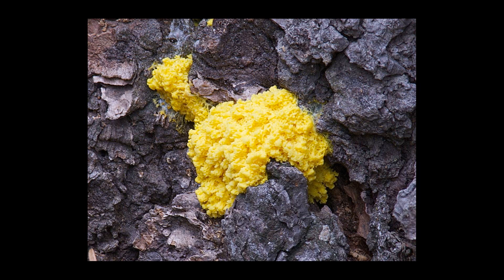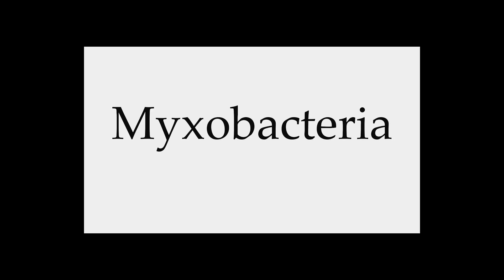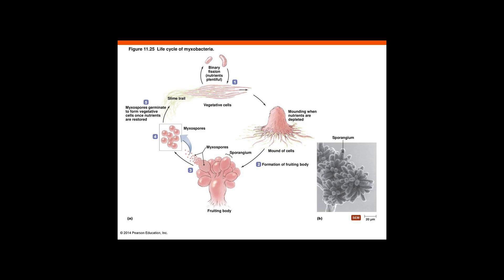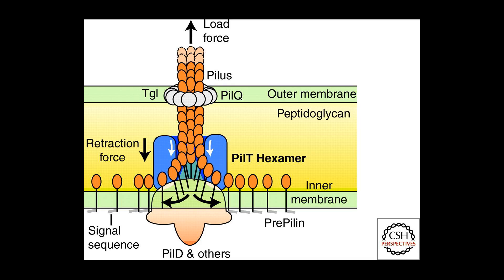Life cycle. When nutrients are scarce, Myxobacterial cells aggregate into fruiting bodies — not to be confused with those in fungi — a process long thought to be mediated by chemotaxis, but now considered to be a function of a form of contact-mediated signaling. These fruiting bodies can take different shapes and colors, depending on the species.